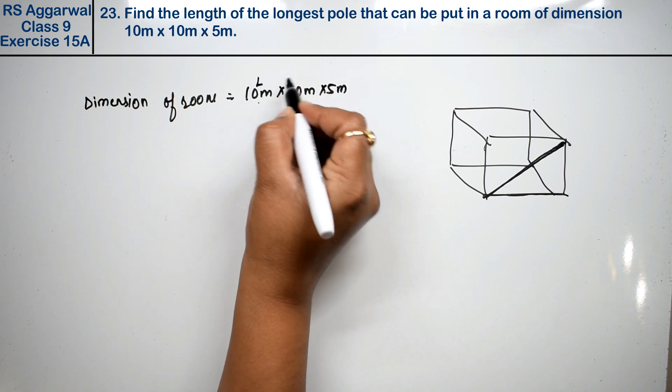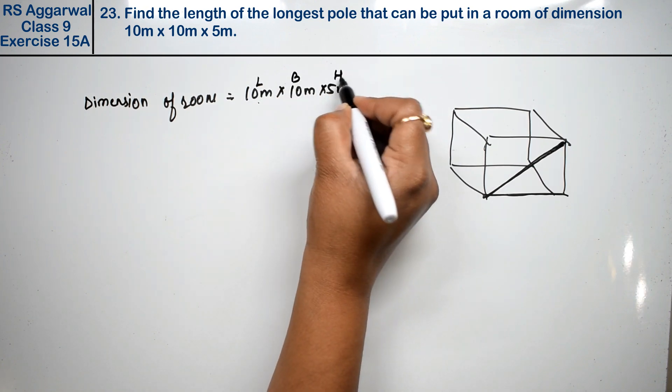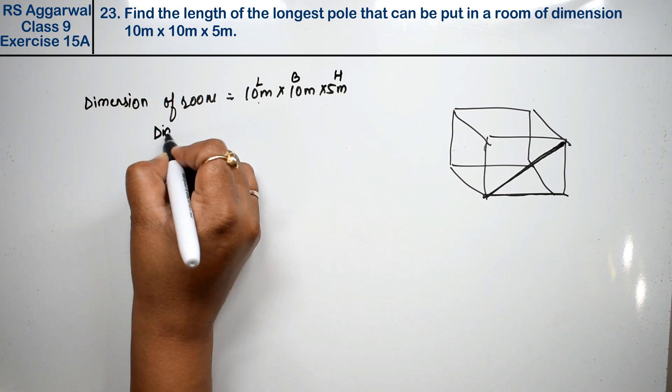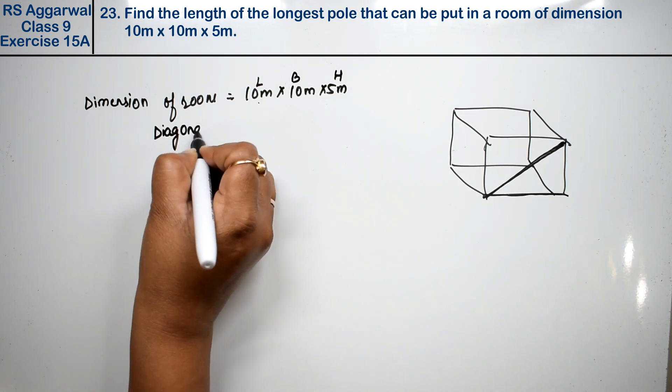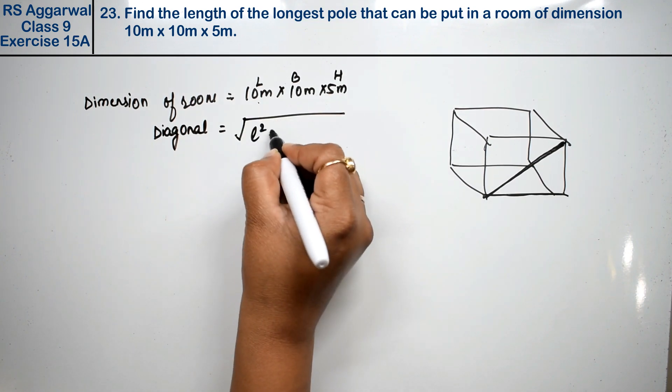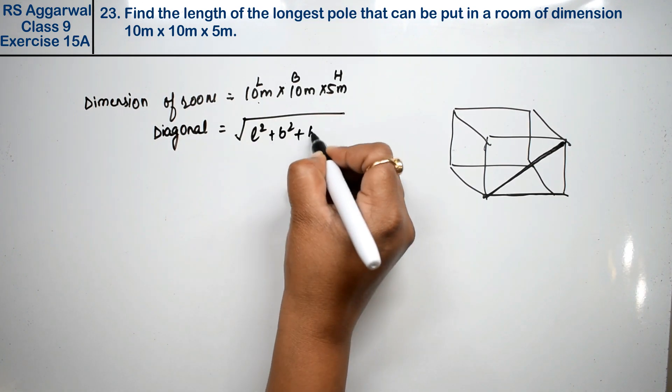So what should we take out? The diagonal. If I say length, breadth and height for this length, what was the formula? Diagonal formula was square root of L squared plus B squared plus H squared.